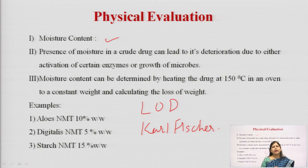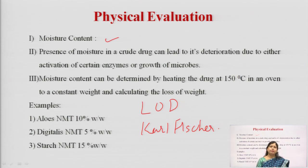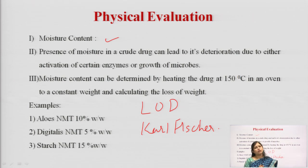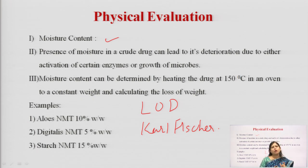LOD means loss on drying: a particular amount of drug is weighed then kept in a hot air oven for about 2–3 hours at more than 105°C (can be increased to 150°C, but 105°C is the minimum). We keep weighing the sample again and again until a constant weight is reached. Once constant weight is reached the drug has lost all moisture, and we calculate the difference between initial weight and weight after drying to determine the moisture lost.